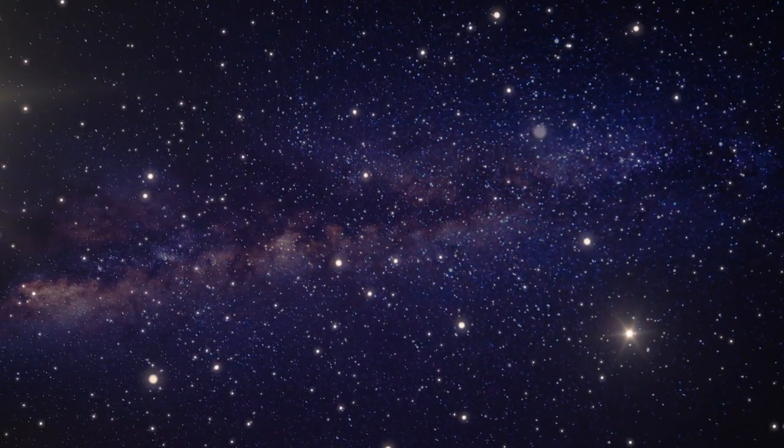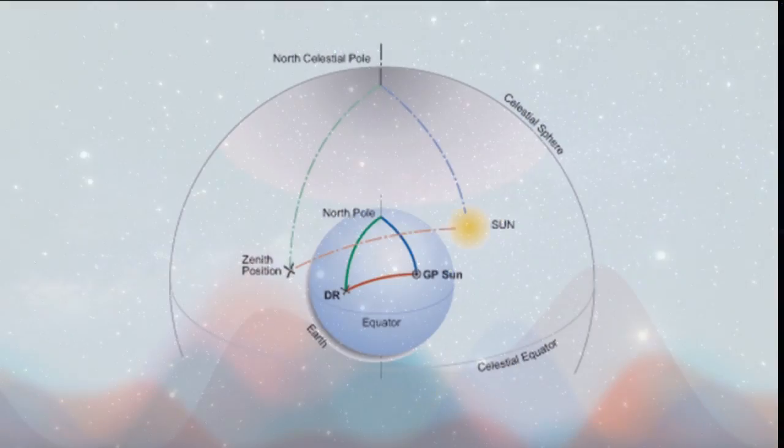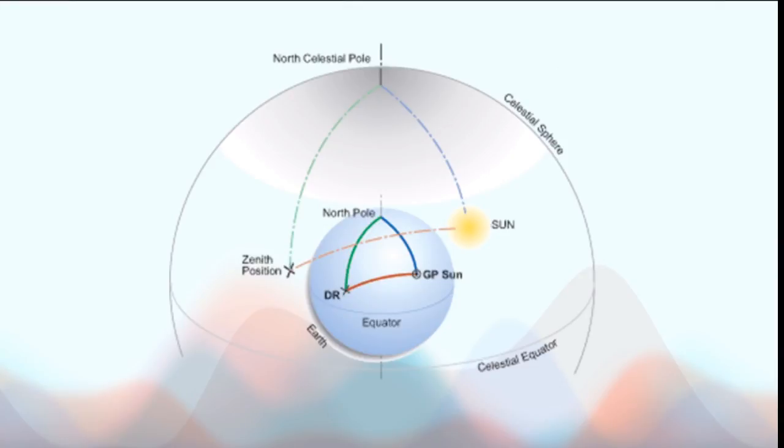And in order to do this, navigators used spherical trigonometry, which involves triangles on spheres which was useful because, surprise surprise, we live on a sphere.